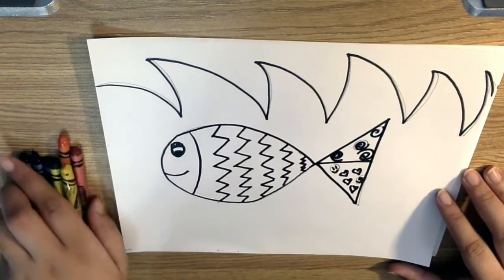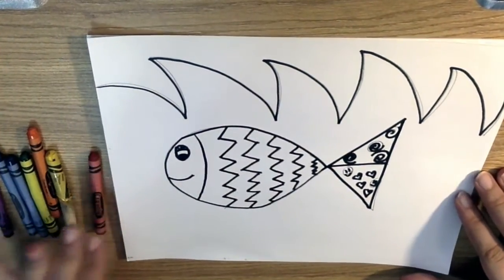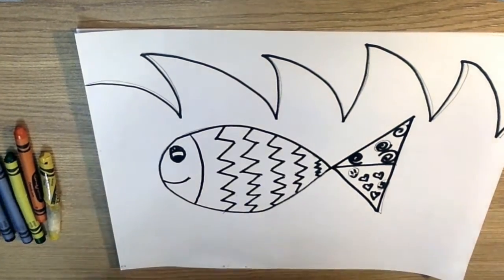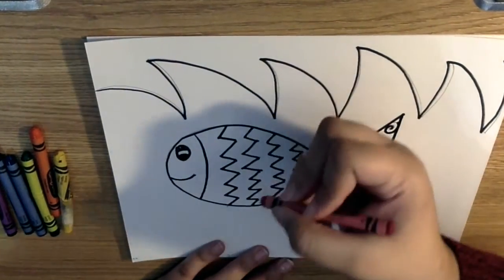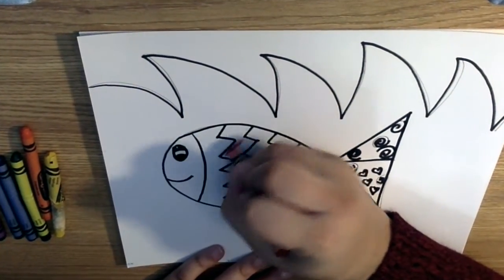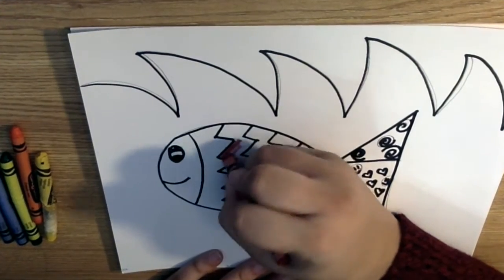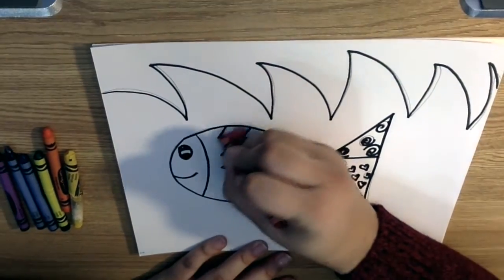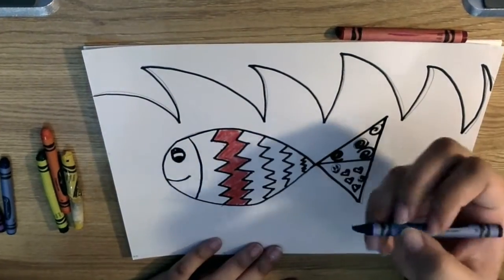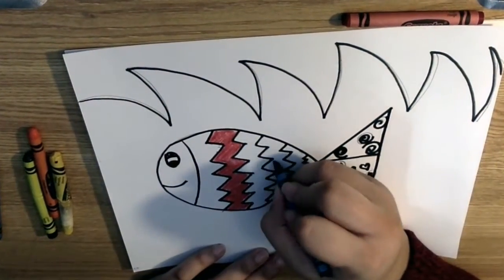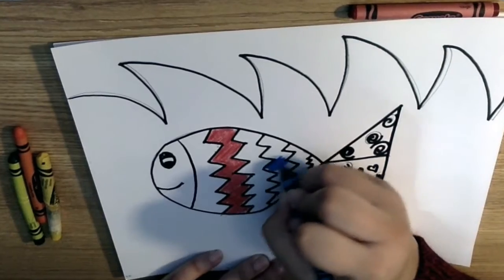Take your colors that you pulled out of your crayon box, your rainbow colors, and begin coloring in the fish body. So you don't have to do it exactly like mine. I'll start off and color the middle red, blue color, and I'll color this part in.